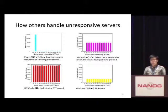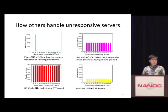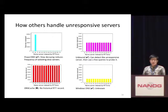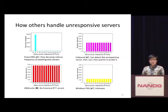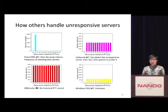Looking at how other caching resolvers handle unresponsive name servers: PowerDNS shifts all queries from the unresponsive first name server to the second, because PowerDNS uses a very slow decaying speed, so the unresponsive name server needs to wait about three minutes to be selected again. Unbound can detect the unresponsive name server, and once detected, uses only a few queries to probe that name server until it comes back. DNS Cache cannot detect the unresponsive name server since it does not measure round-trip time. Windows DNS can detect the unresponsive name server and avoid sending queries to it.